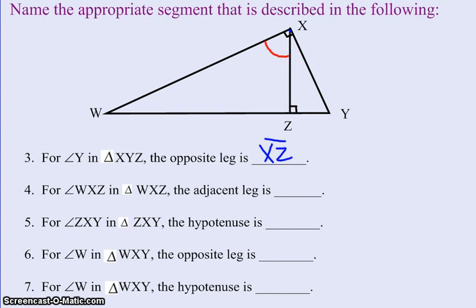Problem number four is talking about for angle WXZ. So starting at W, going up to X and down to Z would be this angle right here in triangle WXZ. So we're looking at this medium-sized triangle in our picture. They want to know the adjacent leg. Well, my 90-degree angle is here, so that would make this the hypotenuse. So the adjacent would have to be this side because it's the other one that's touching the angle. It's next to it. It's adjacent to it, but it's not the hypotenuse. So we would say XZ again.